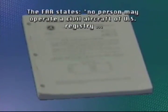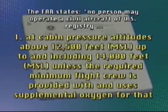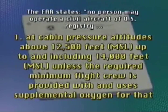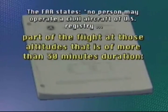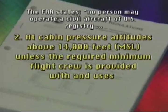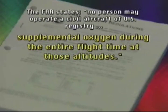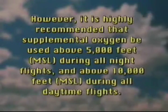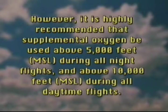The FAR states no person may operate a civil aircraft of U.S. registry: 1. at cabin pressure altitudes above 12,500 feet MSL up to and including 14,000 feet MSL unless the required minimum flight crew is provided with and uses supplemental oxygen for that part of the flight at those altitudes that is of more than 30 minutes duration; 2. at cabin pressure altitudes above 14,000 feet MSL unless the required minimum flight crew is provided with and uses supplemental oxygen during the entire flight time at those altitudes. However, it is highly recommended that supplemental oxygen be used above 5,000 feet MSL during all night flights and above 10,000 feet MSL during all daytime flights.